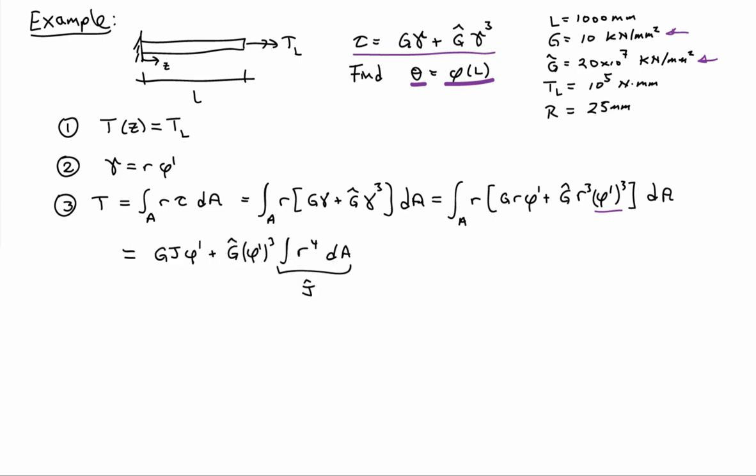But I can still expand things out like I did before. I find out that the torque is GJ phi prime plus G hat phi prime cubed. And then let me go ahead and call this integral of R to the 4 dA. I'll just go ahead and call that G hat or J hat just for convenience. So it's similar to the polar moment of inertia, but it's the fourth moment.